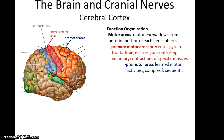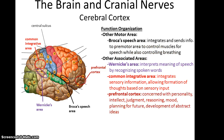In front of that is the pre-motor area, where you get learned motor activities — for instance, learning how to do a layup so that it's just natural. You have Broca's speech area, which integrates and sends information to the pre-motor area to control muscles for speech and also helps control breathing. You've got the Wernicke area, which helps to interpret the meaning of speech by recognizing what spoken words are. You have the common integrative area that helps integrate all the sensory information so we can form thoughts. And then the prefrontal cortex, which is where personality and intellect are, where we do reasoning, planning for future events, and development of abstract ideas.